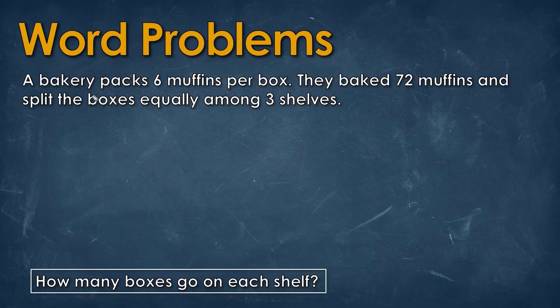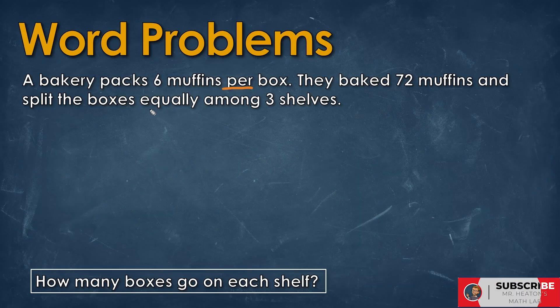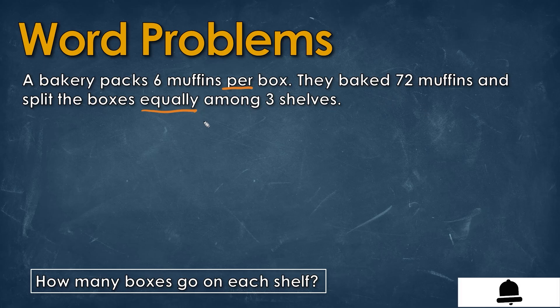In this first word problem, we want to look for words that are going to tell us what we're going to do. We see the word 'per' and the word 'equally,' and both of them actually mean we're going to be doing division.